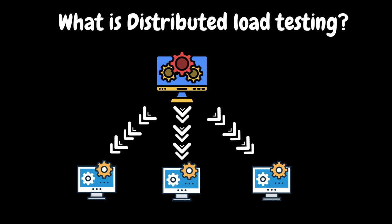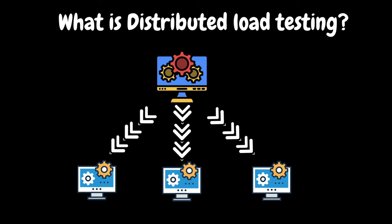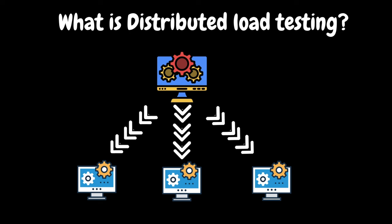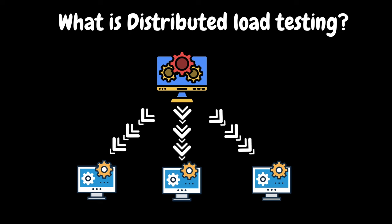So this is where JMeter introduced the concept of distributed load testing. Distributed load testing refers to the process of distributing the workload generated by the performance test across multiple machines or servers. This method helps to simulate a large number of virtual users or threads on the target system, allowing for more accurate assessment of the system's scalability and performance under realistic workload conditions.